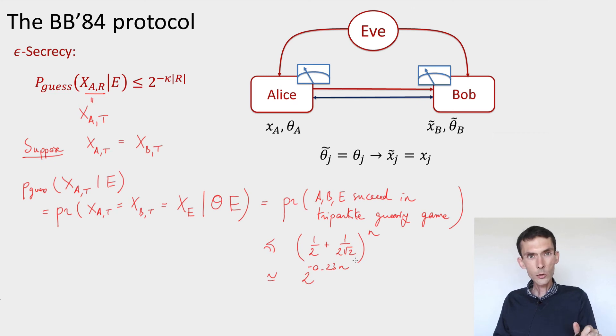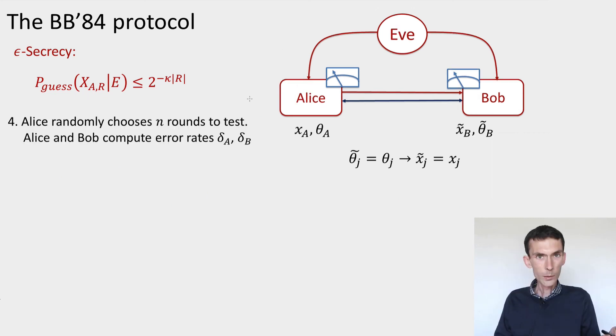Of course, there are still these two simplifying assumptions. In practice, we know that these are not going to hold. Alice chooses some rounds to test, the set T, and we're going to observe some error rate δ that Alice will observe, δ_A and δ_B. In that case, you get a slightly weaker result.